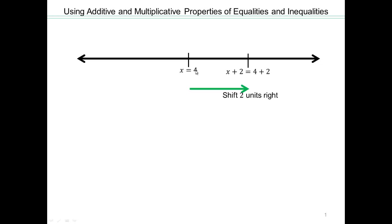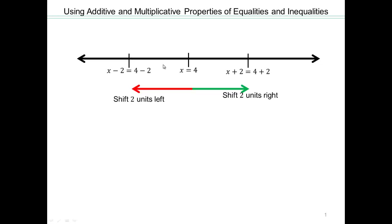If you subtract 2 from the 4, you'll go 2 units to the left, and you'll also have 2 units to the left for x minus 2. Again, they're both sitting on the same tick mark. This tells us that if you add 2 to both sides of this equation, you have another equation. Same thing if you subtract 2 from both sides — you have another equation. These three equations are equivalent to each other, and they were all derived from x equals 4.